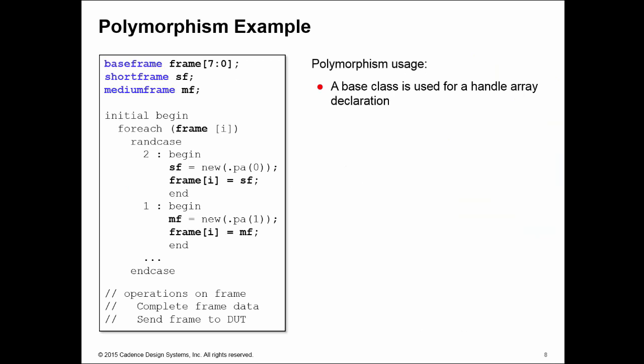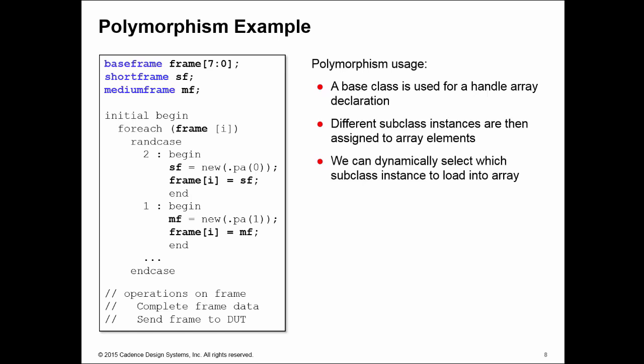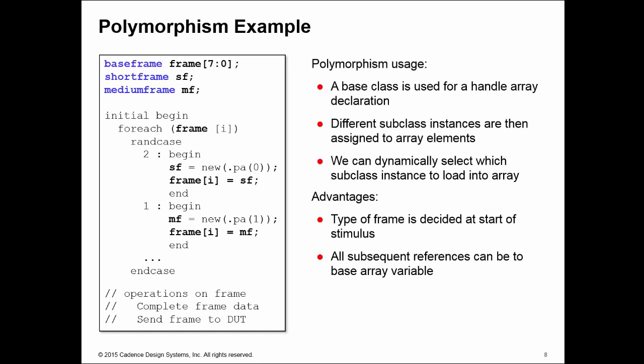Here is another example of polymorphism: an array called frame of eight base frame handles. In an initial block, a foreach loop iterates over the frame array. For every element, a rand case randomly generates either a short frame instance or a medium frame instance and copies it into the next element of the frame array. This allows the base frame array to be loaded with different subclass instances dynamically during simulation — sometimes called late binding. The advantage is that the type of the frame is decided in one place at the start of simulation, and if new subclasses are needed, you simply add new branches to the rand case without changing the rest of the test bench.